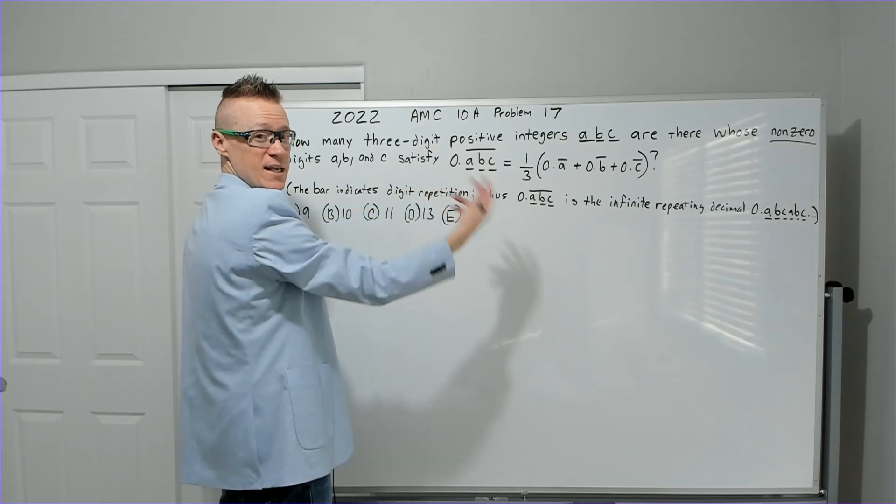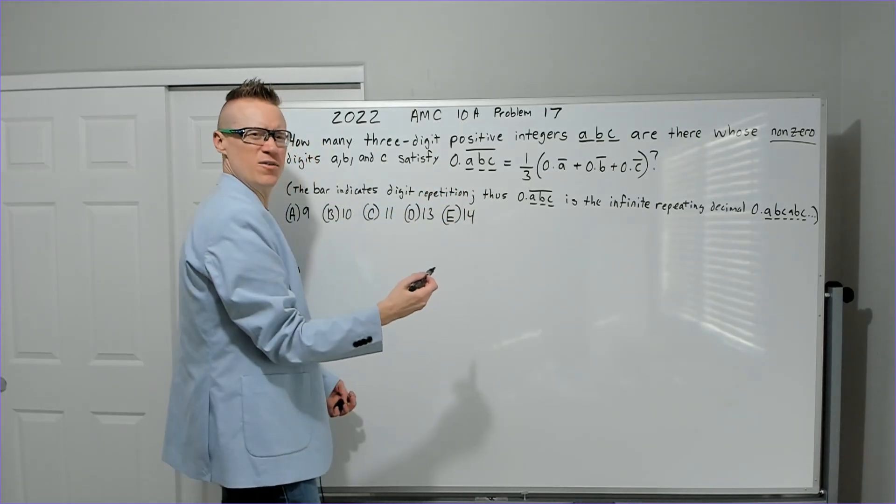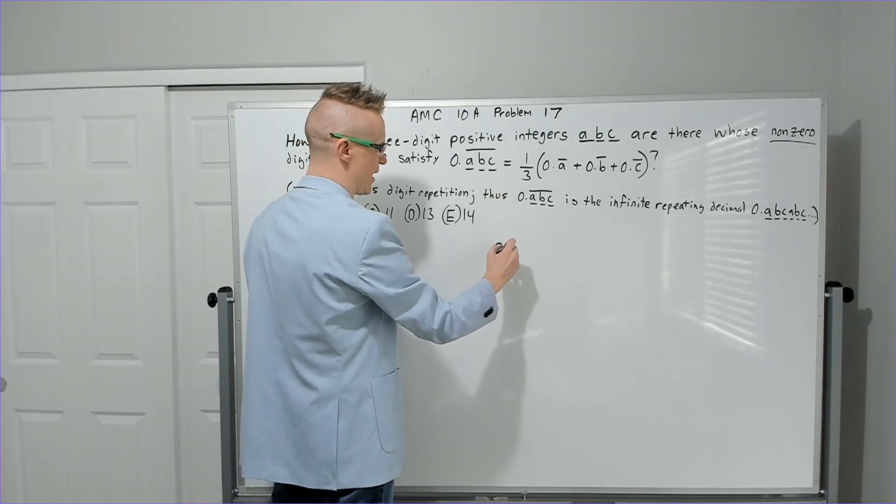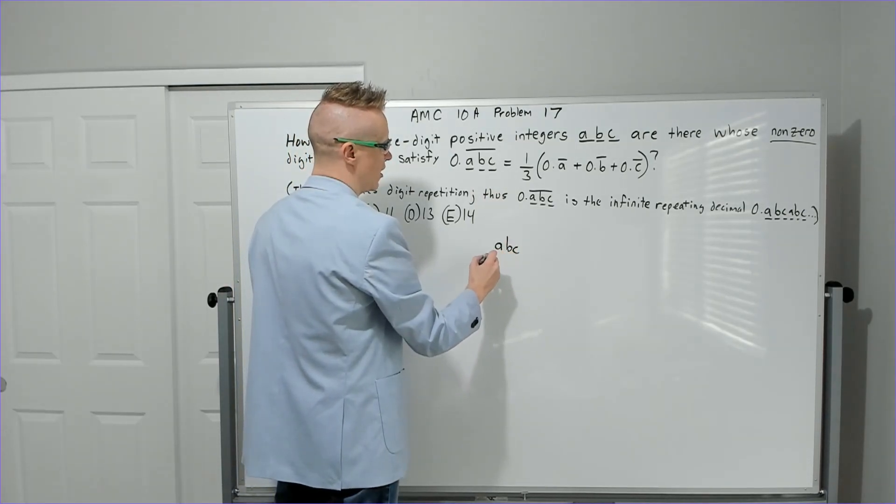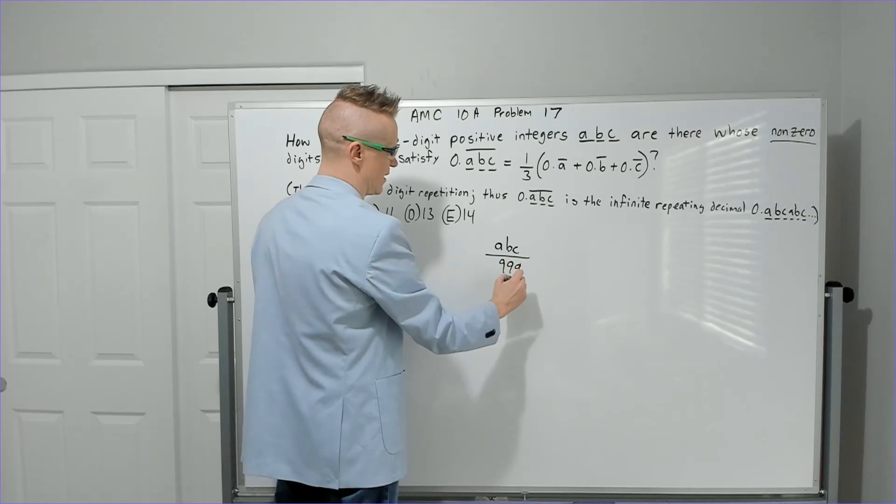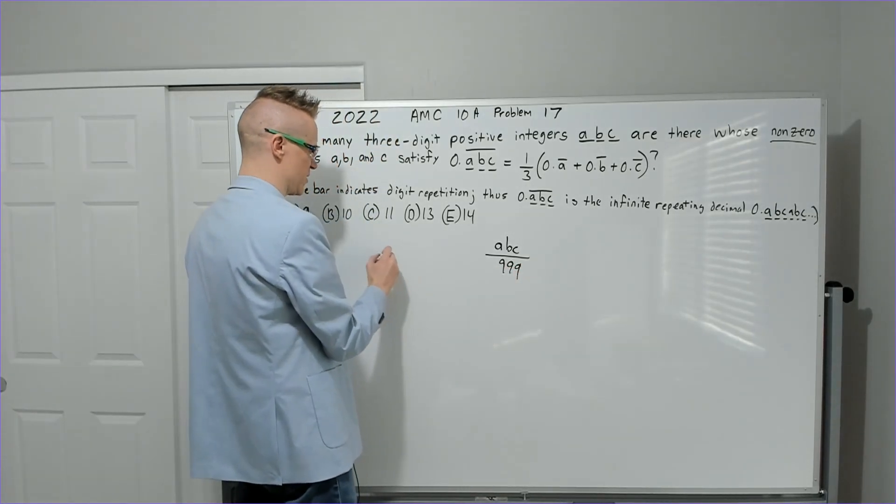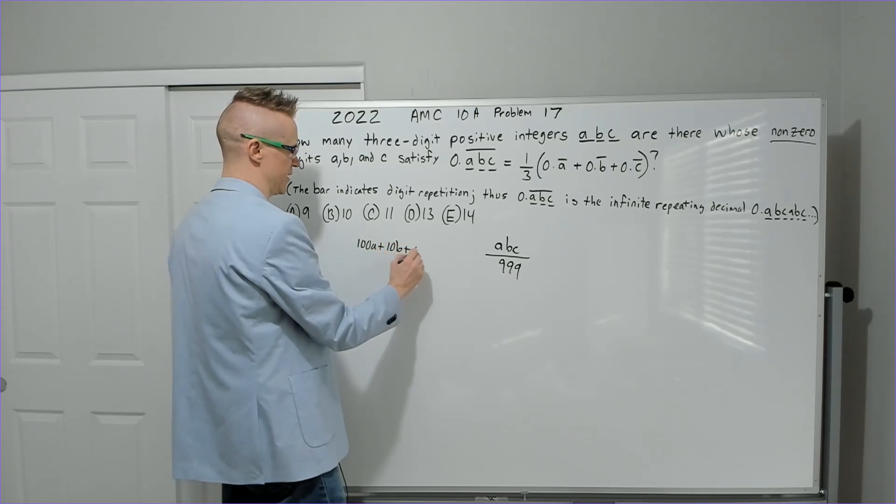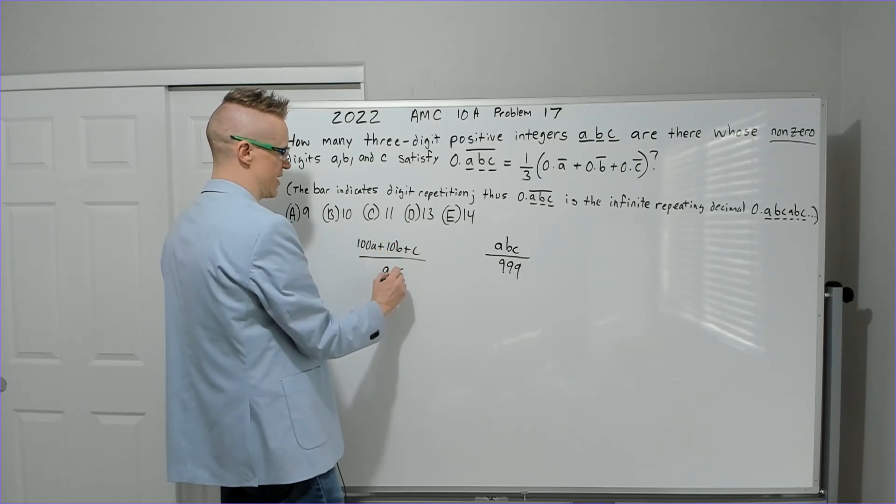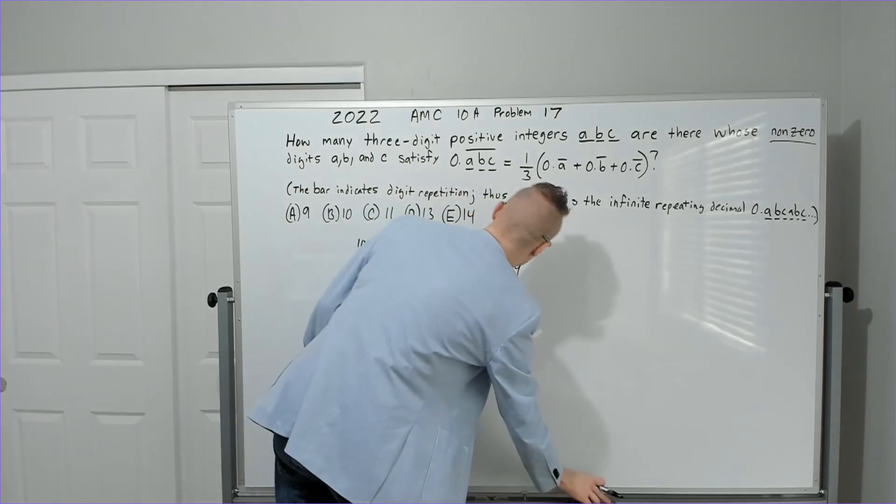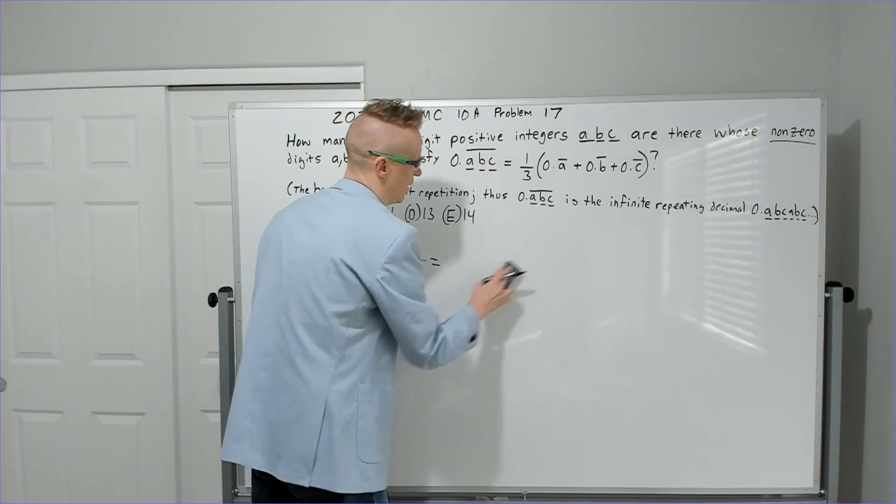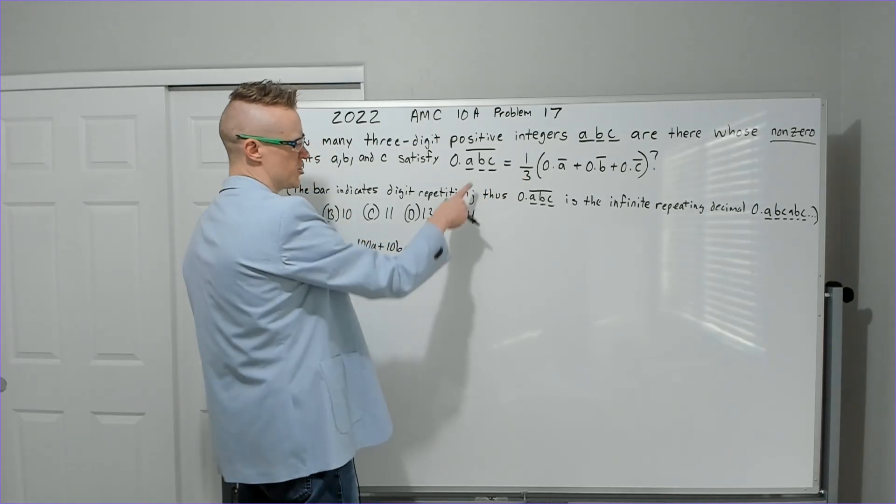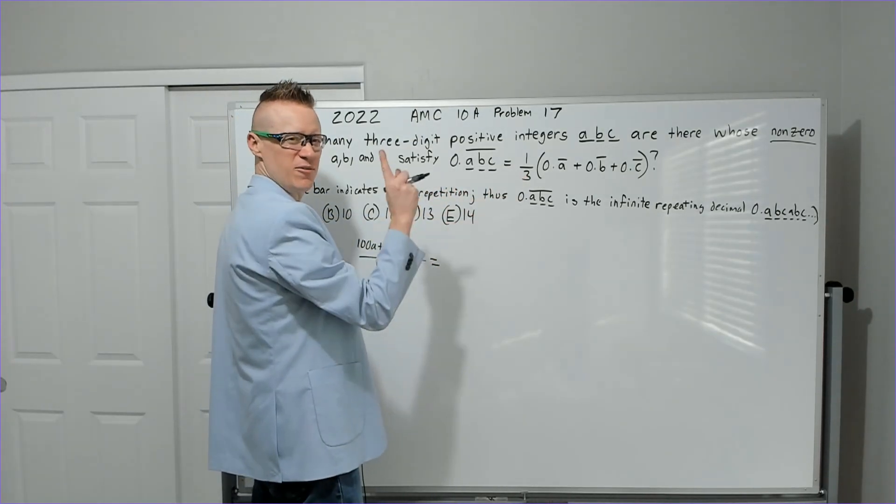The equation shows digits in a repeated fashion. You might know the shortcut: three things in a row is going to be ABC over 999. Technically it's more of 100A plus 10B plus C over 999. This will need to equal one-third.